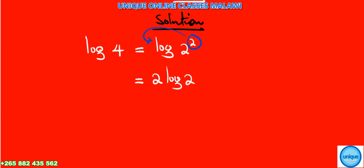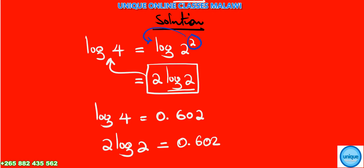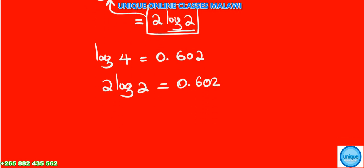We can determine that log of 4 is 0.602. Coming back to it with log of 4, we can write that 1 as a 2, meaning 2 times log of 2 is equal to 0.602.